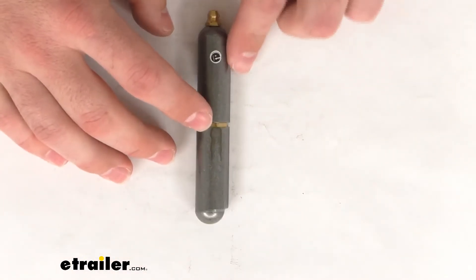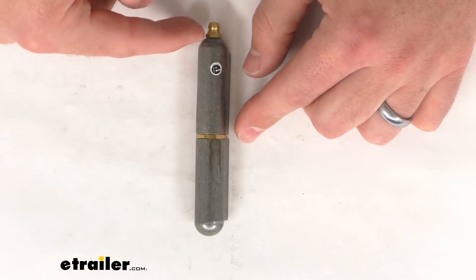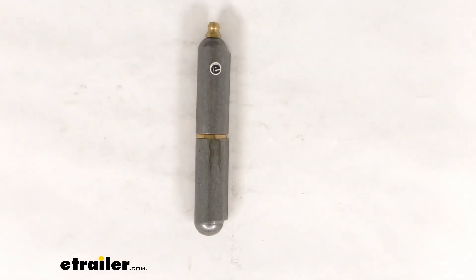So a really nice option here if you are looking for a three and five sixteenth inch long steel weld-on hinge. That's going to complete our look for today. Again, I'm Michael with eTrailer.com. Thanks for watching.